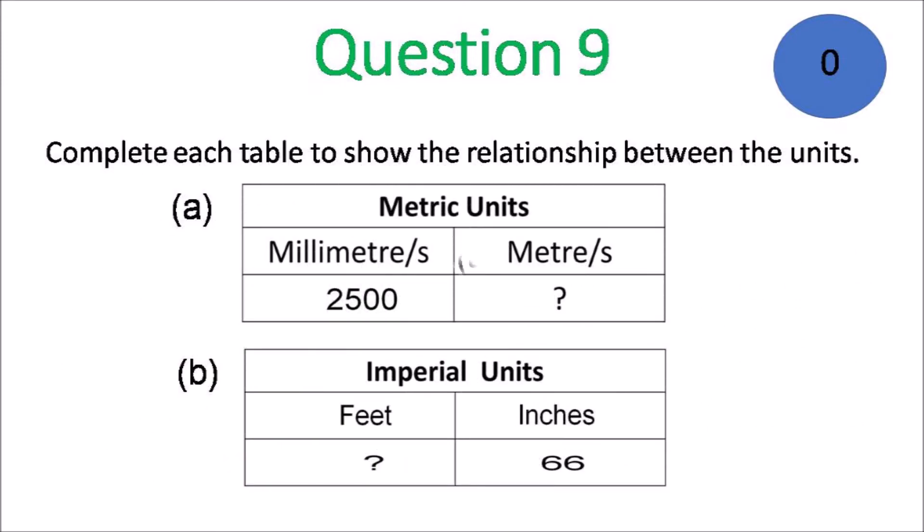Question 9. Complete each table to show the relationship between the units. A would be metric units and B is imperial units.